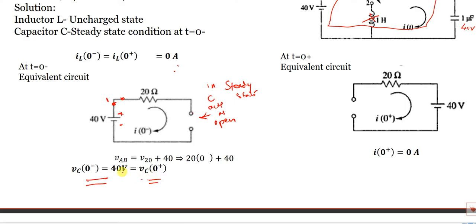Just after switching, Vc(0+) is also 40 volts, because just like a charged mobile battery that holds its value when removed, capacitor voltage is the same just after switching. For i(0-): both terminals are at 40 volts, so the potential difference is zero. Also, since the capacitor acts as an open circuit, current is 0. Therefore i(0-) = IL(0-) = i(0-) = 0 amps.